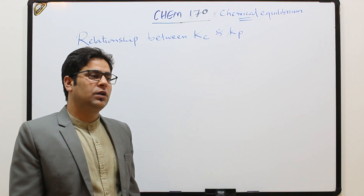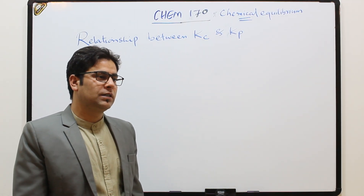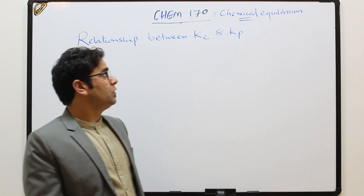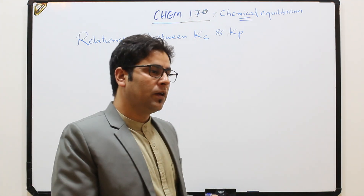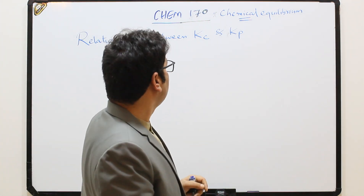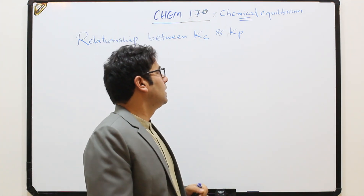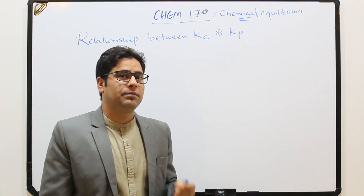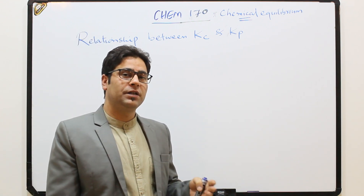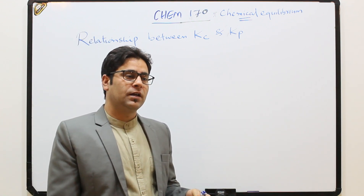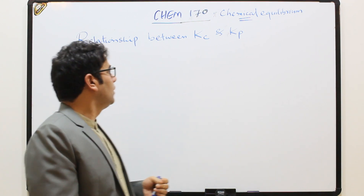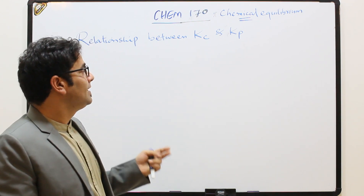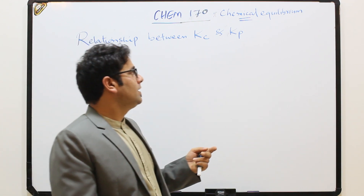Assalamu alaikum. Dear students, last class we started a new chapter on chemical equilibrium. We were discussing how to write equilibrium constant expressions for different reactions. Today we have to give a relationship between Kc and Kp.